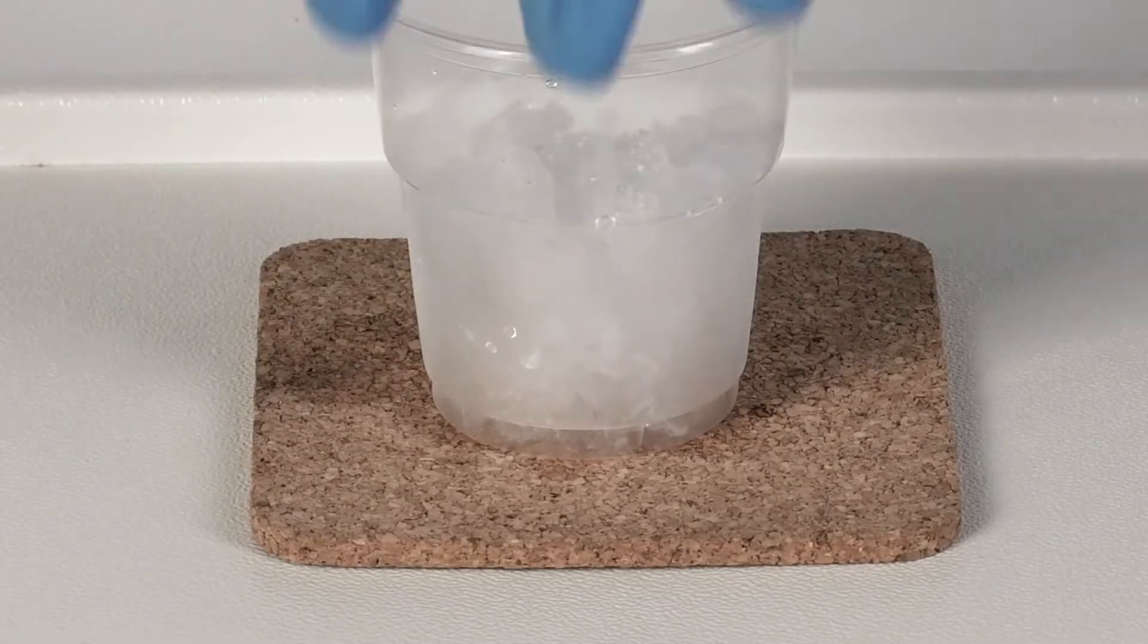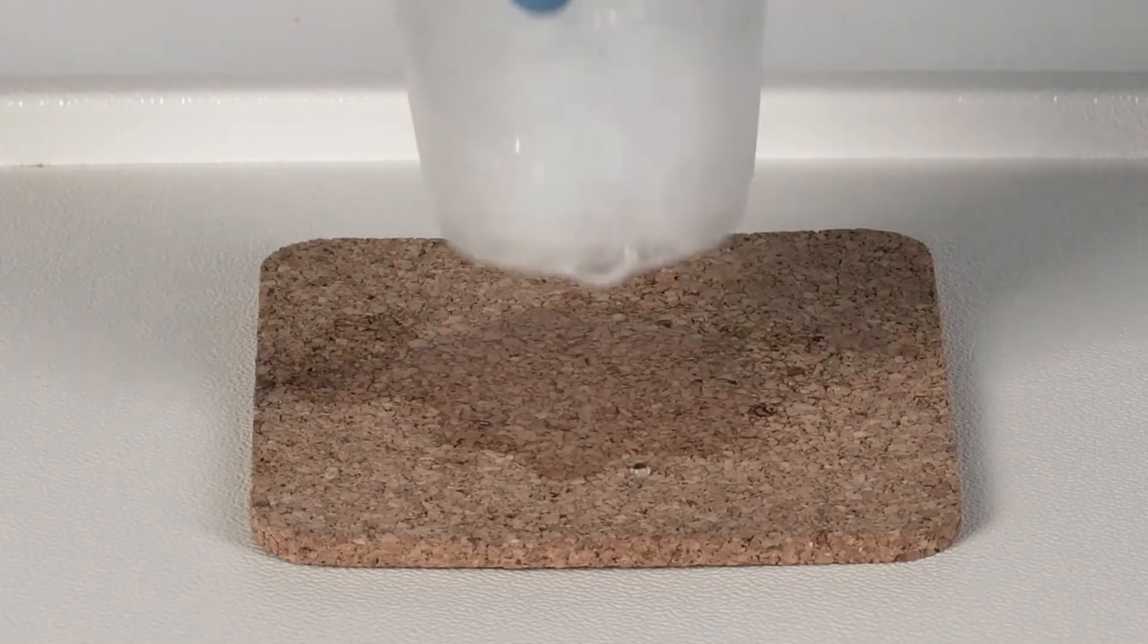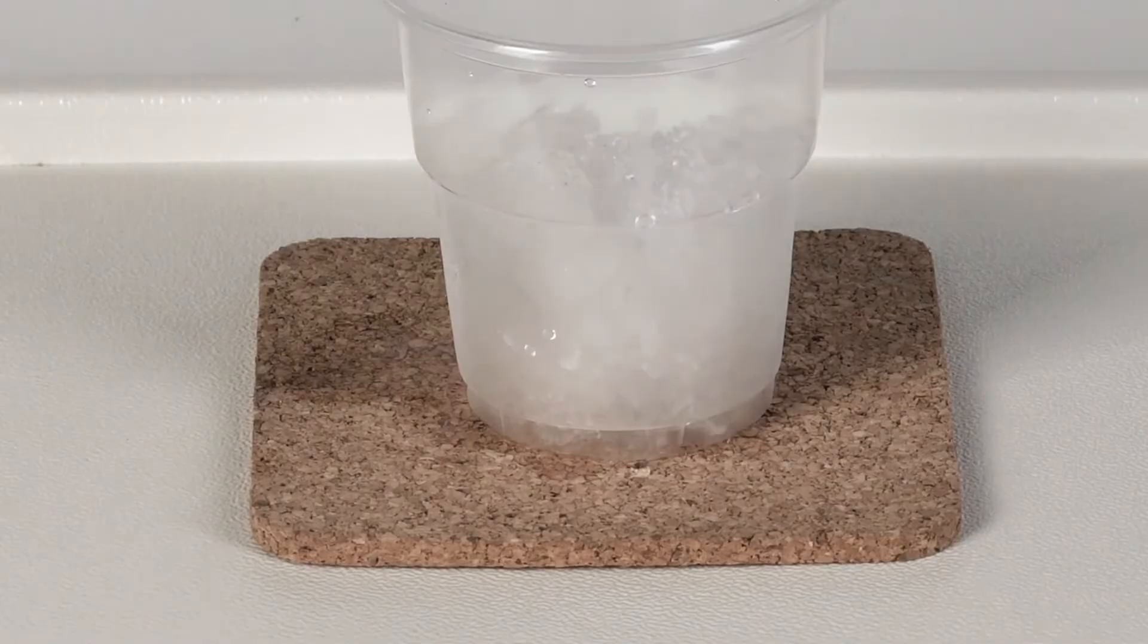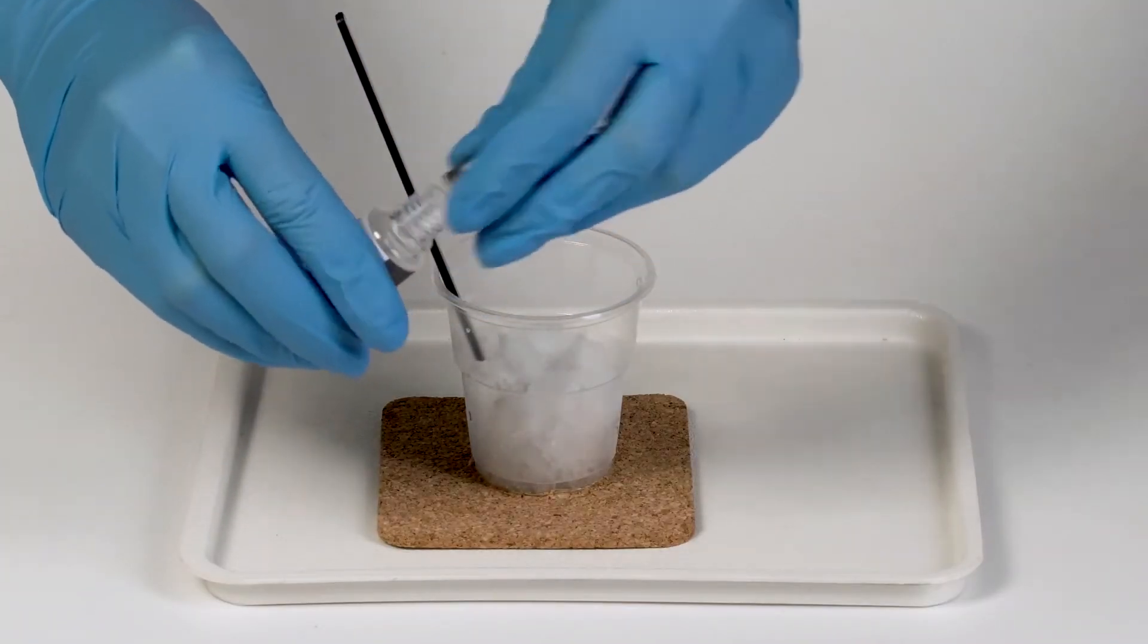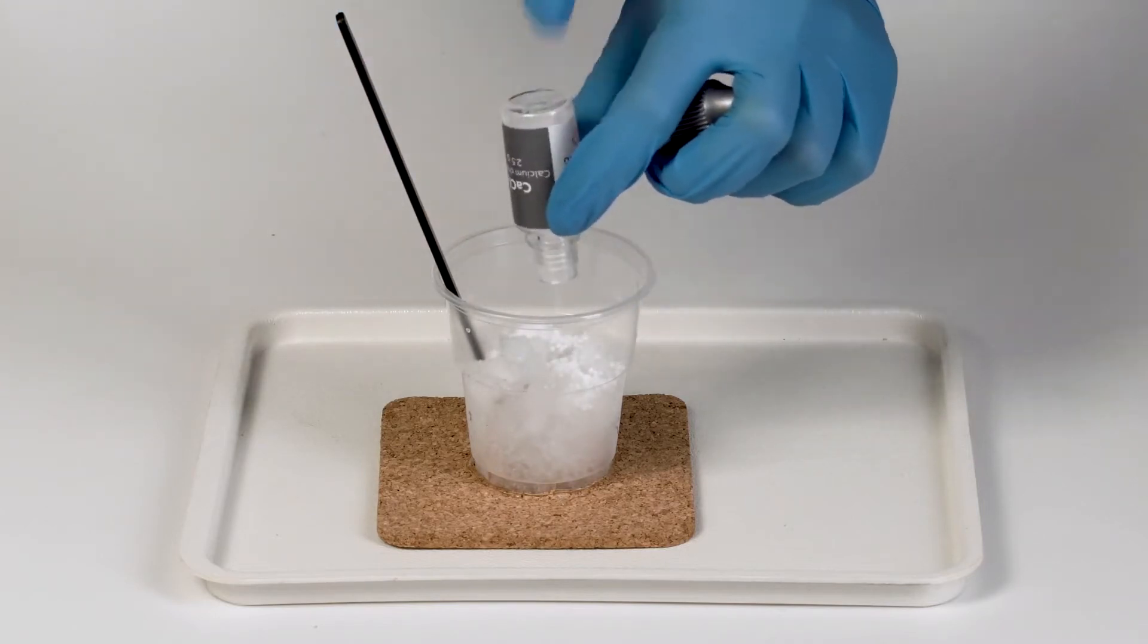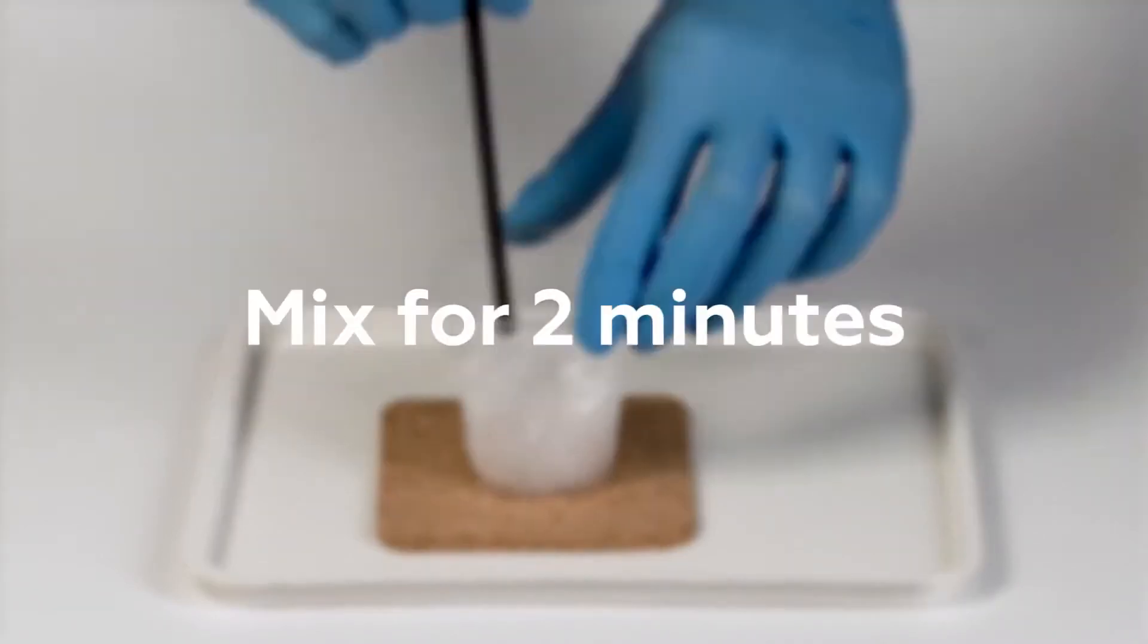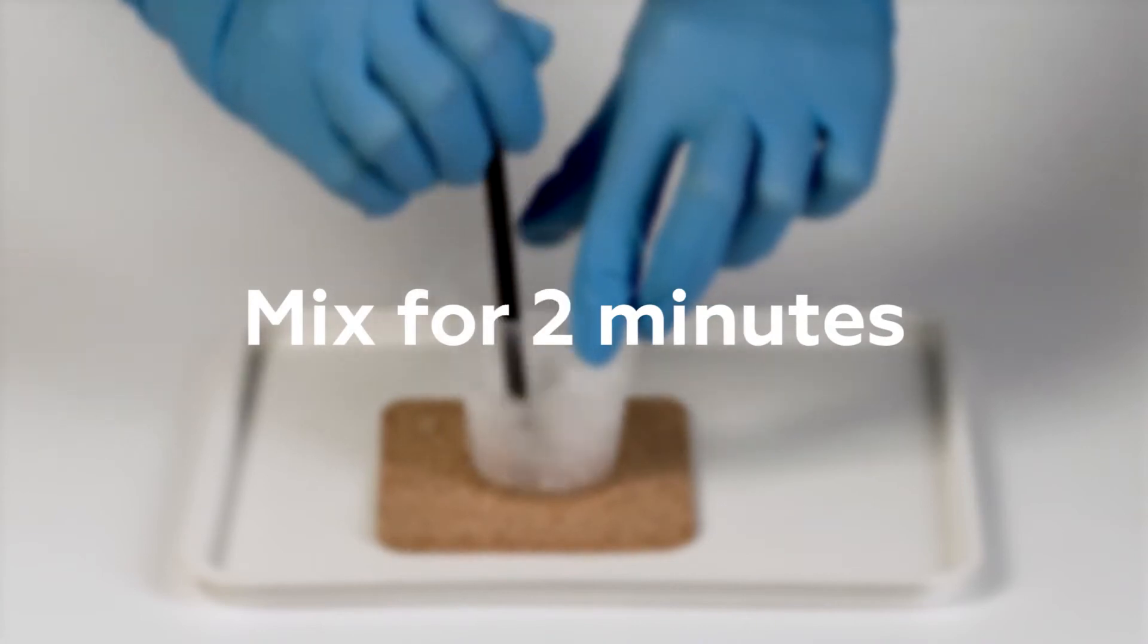Notice how you can easily lift the cup off of the cork stand. Pour one bottle of calcium chloride into the cup with ice. Mix the contents for two minutes.